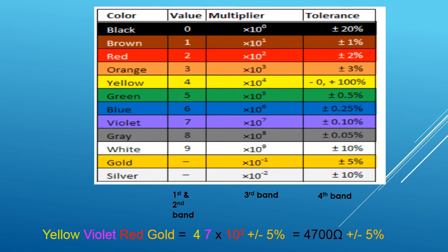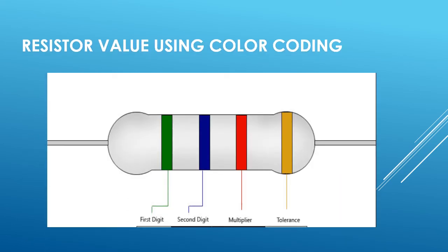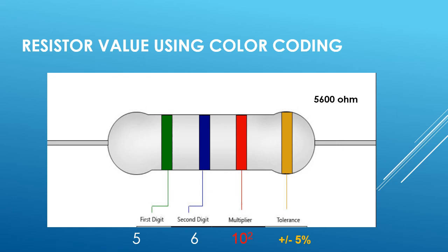Now let's do one more example. Suppose I have this resistor. The first color band is green — value is 5. The second is blue — value is 6. The third band is the multiplier; for red the multiplier value is 10 raised to 2. The tolerance band is gold, so ±5%. The resistor value is 5600 ohm with ±5% tolerance.